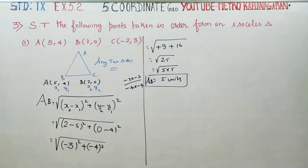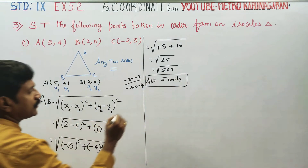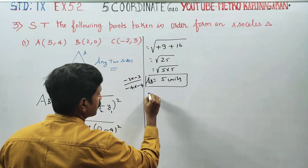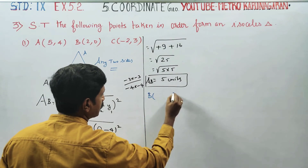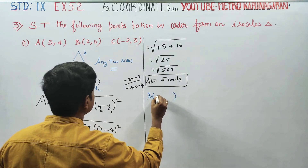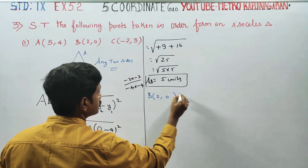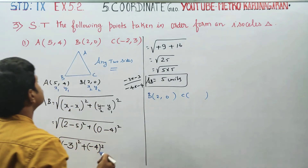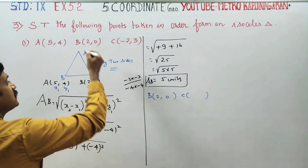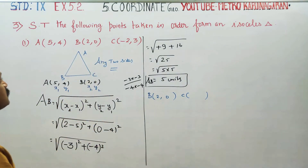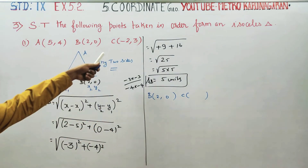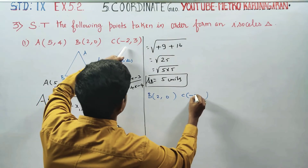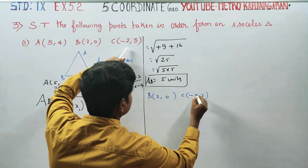AB is ready. Now we go to BC. BC: B is equal to (2, 0) and C is equal to (-2, 3).